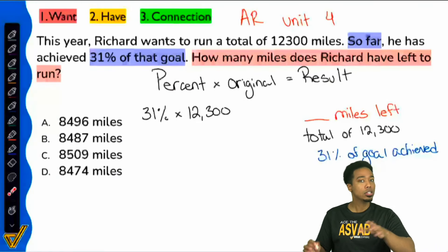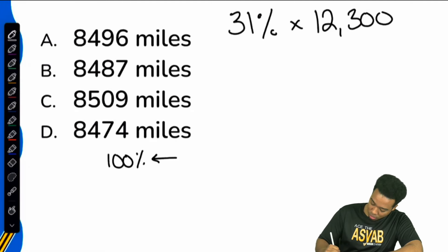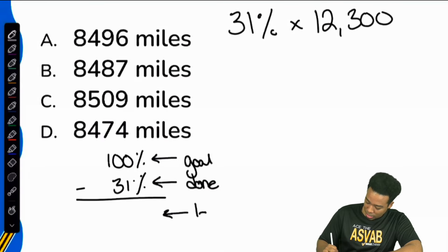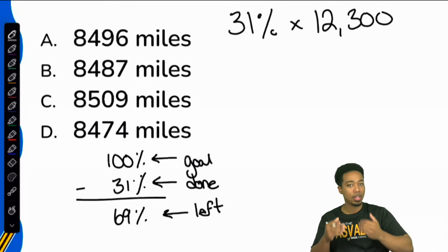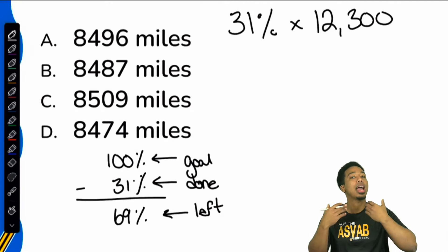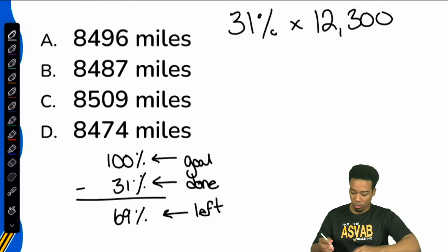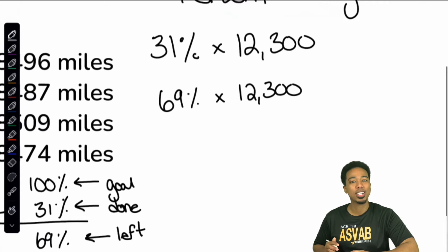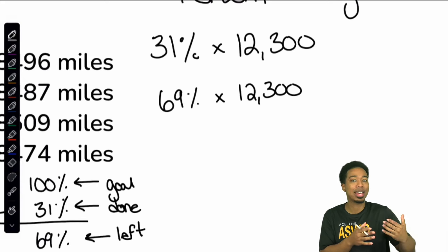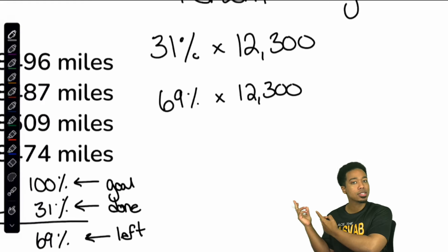31% is how much of the goal we've done — we've achieved. To correct that, here's all you have to do: 100% represents the total goal, and if we take away 31% — how much is done — we get how much is left. So 100 minus 31% equals 69%. So 69% is what we have left. If we want to calculate this in one shot, we have to acknowledge that 69% represents what's left — that's the percent we need to apply. So we have 69% multiplied by 12,300. Because 31% represents how much we have run, applying that would give us how much we've run — not the correct answer. With 69%, we can get the correct answer in one shot.